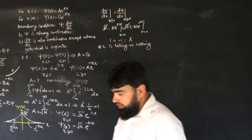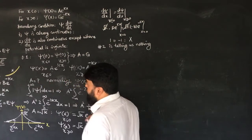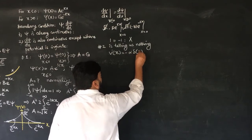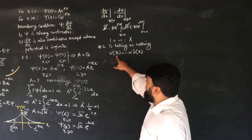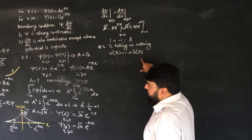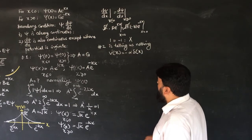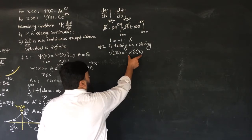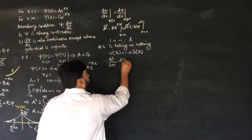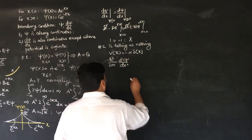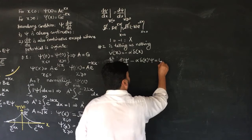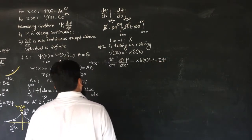We will now further understand this. So far we haven't yet encountered our potential — the potential we assumed: minus alpha times delta(x). We haven't yet used this potential. What we did was solve the Schrödinger equation on each side of the potential where V = 0. Now we will solve our wave function incorporating this potential. The Schrödinger equation is: −ℏ²/2m · d²ψ/dx² − α δ(x) ψ = E ψ.